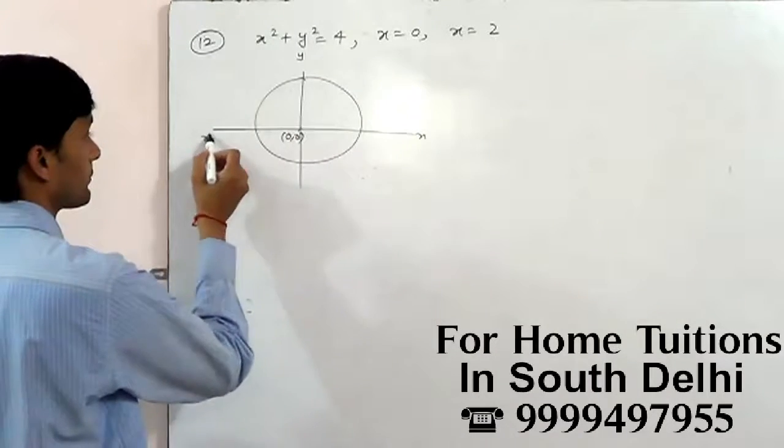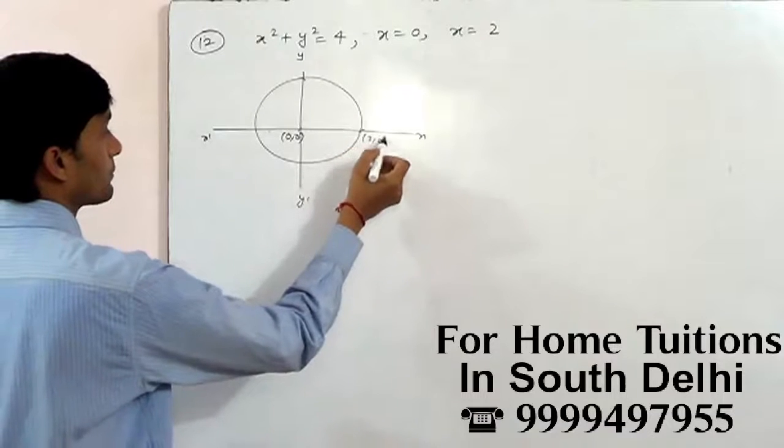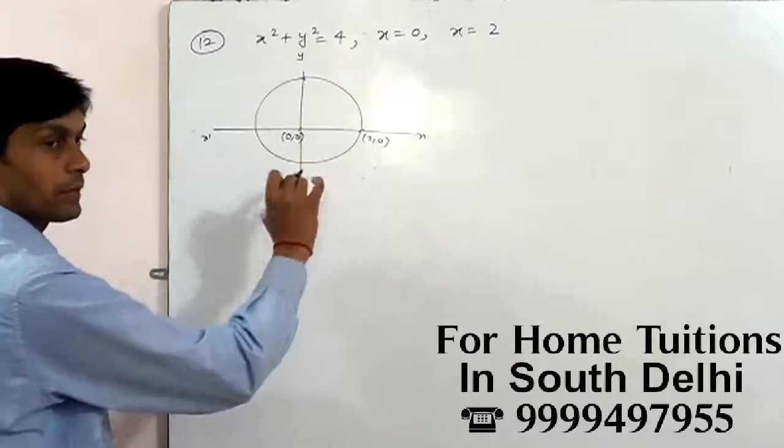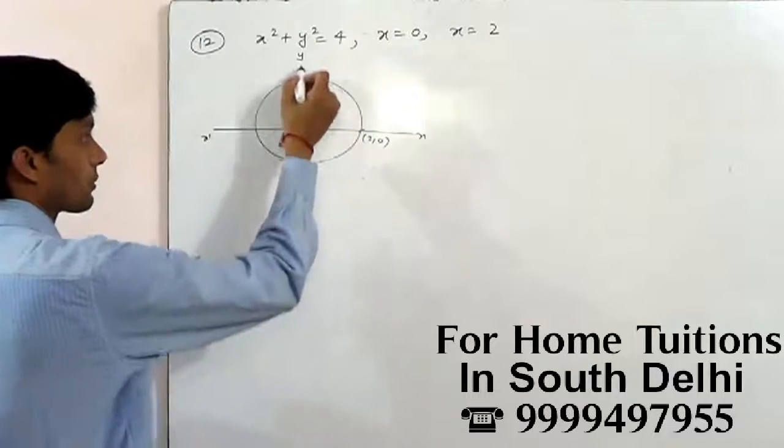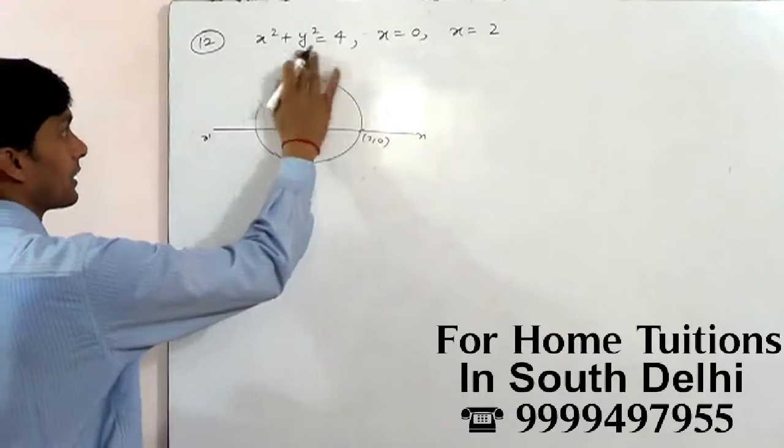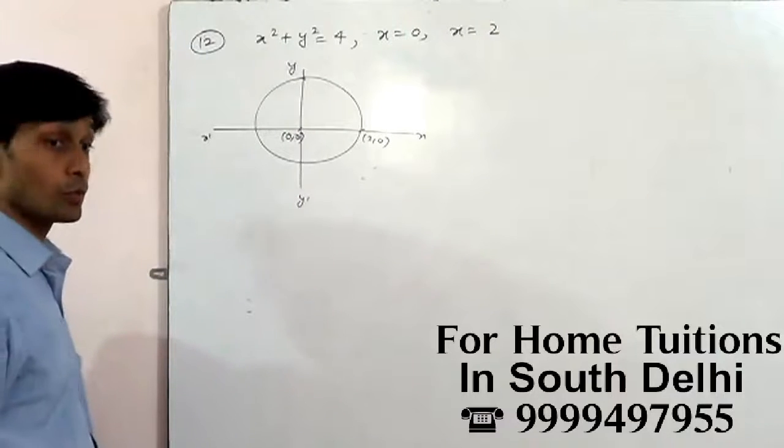You can find the area of circle where X is equal to 0, Y is equal to 2, X is equal to 2.